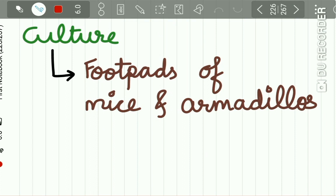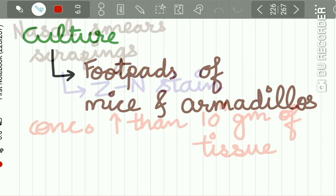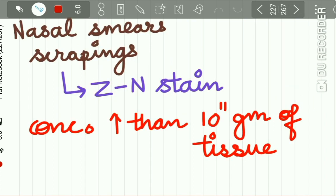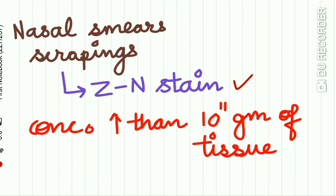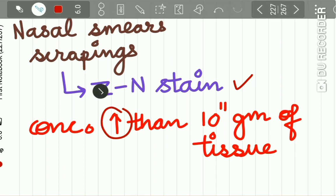For diagnosis, leprosy can be cultured from the foot pads of mice and armadillos. Nasal smear scrapings on ZN stain may show acid-fast bacilli in a concentration higher than 10 to the power of 11 per gram of tissue.